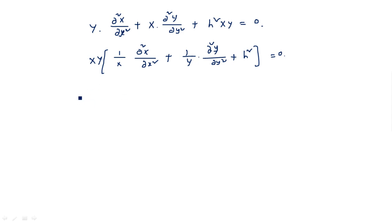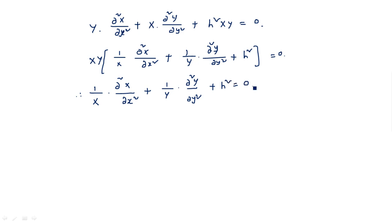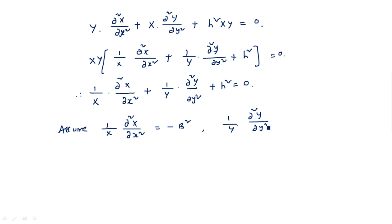From the separated equation (1/X)·∂²X/∂x² + (1/Y)·∂²Y/∂y² + h² = 0, we assume (1/X)·∂²X/∂x² equals minus b² and (1/Y)·∂²Y/∂y² equals minus a². This gives h² equals a² plus b².